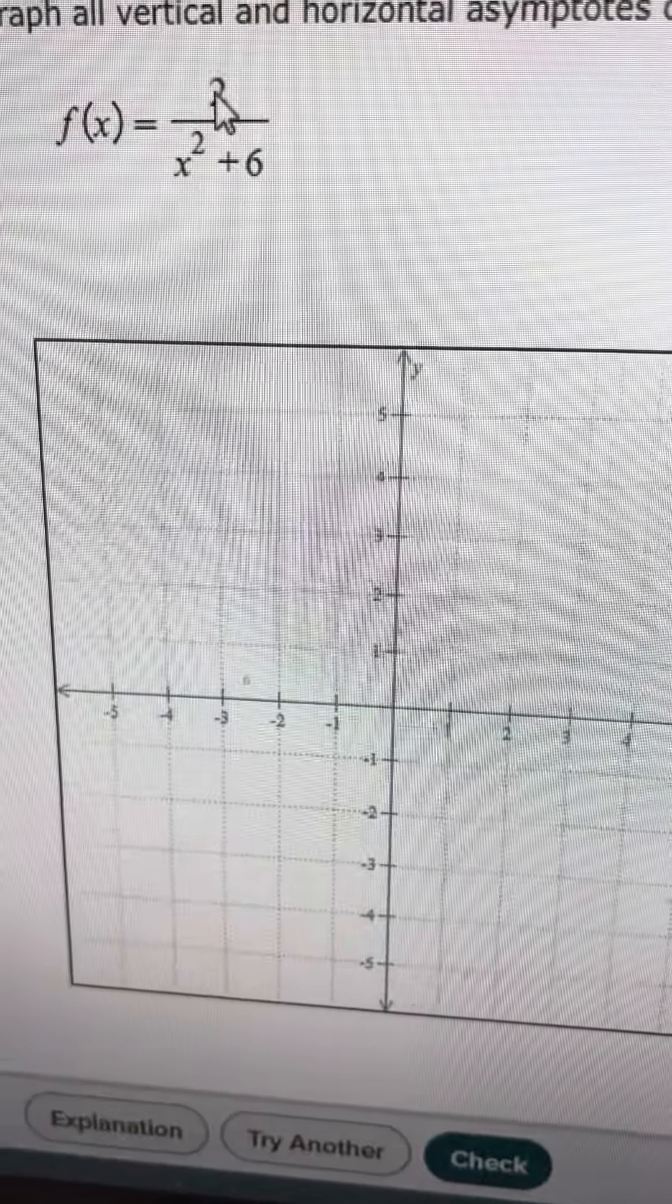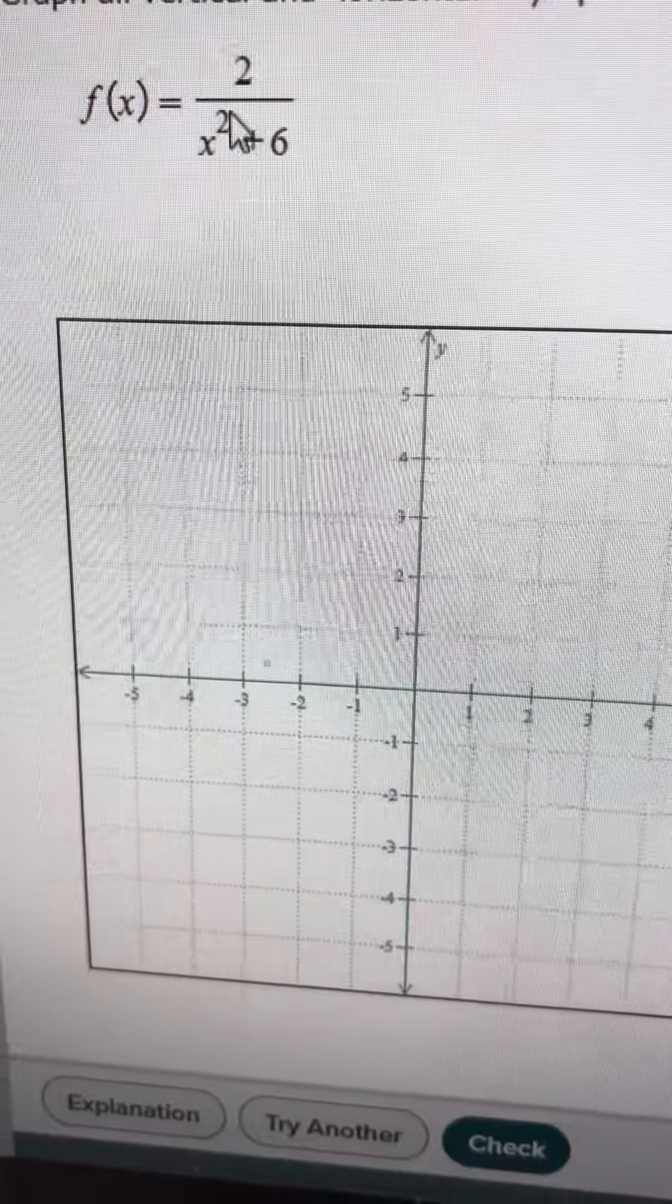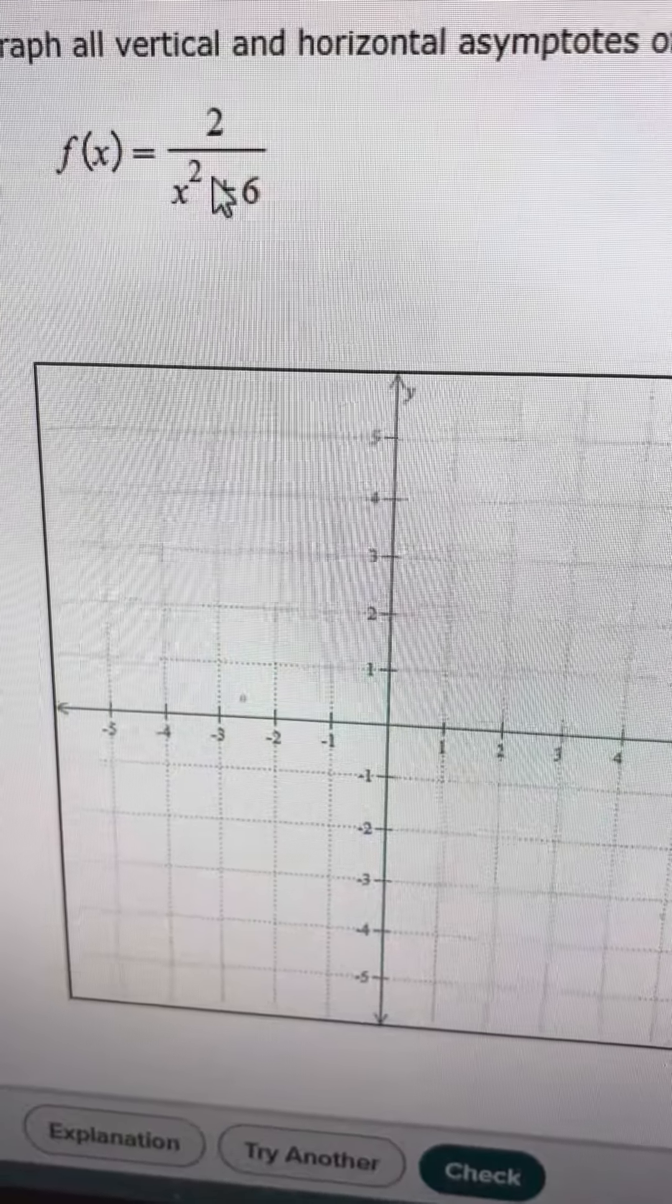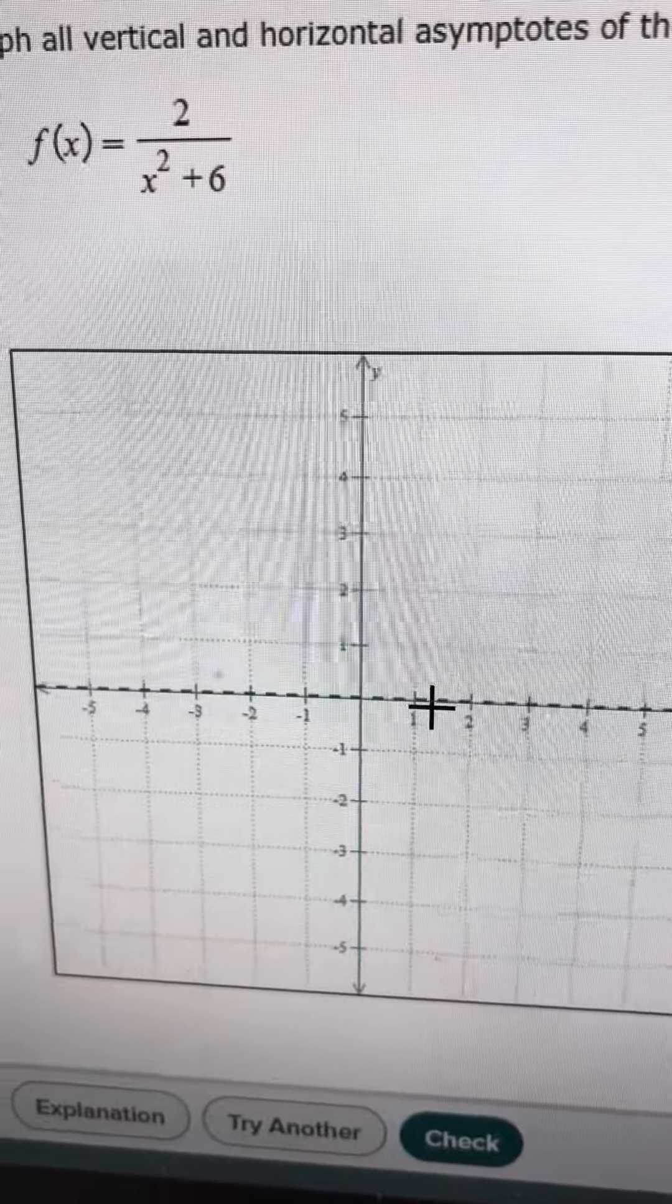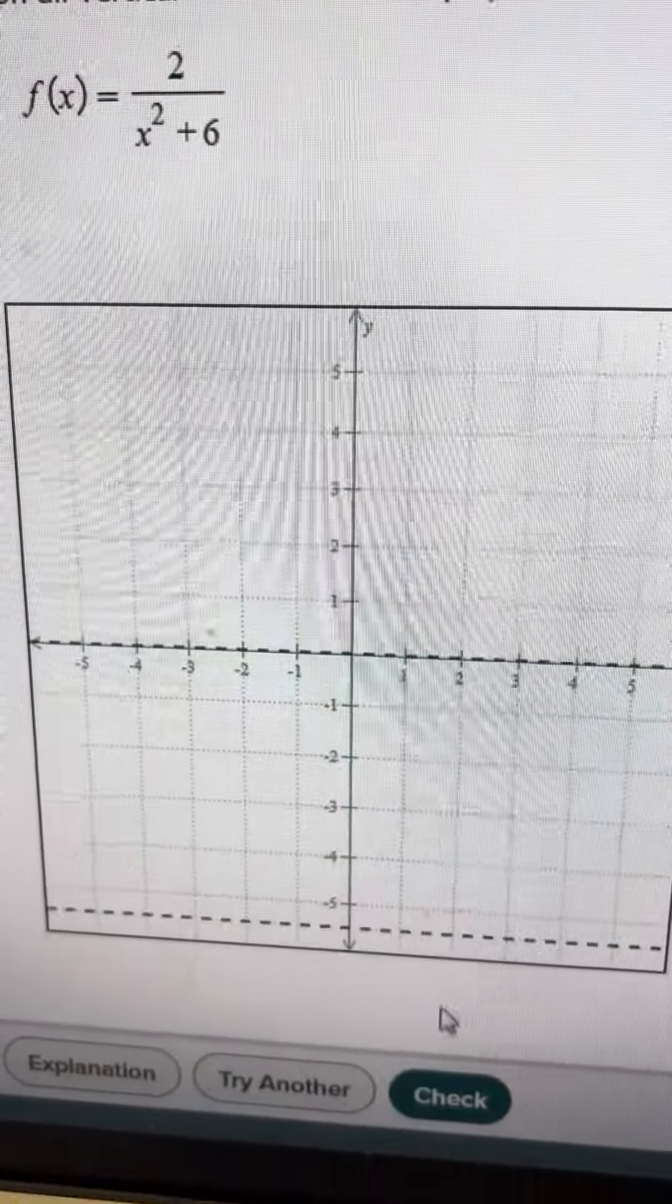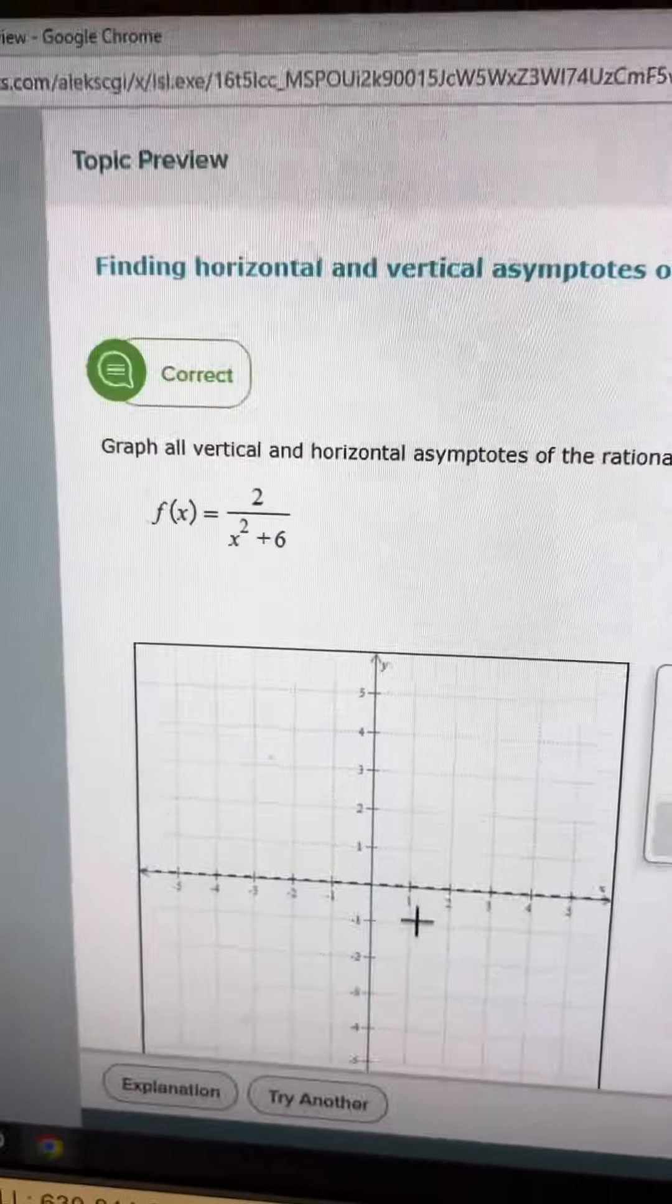Horizontal asymptote, you have a degree of 0 on the top, a degree of 2 on the bottom, larger degree on the bottom, so it's going to have a horizontal asymptote at the x-axis or y equals 0. That's it for that, and we're correct.